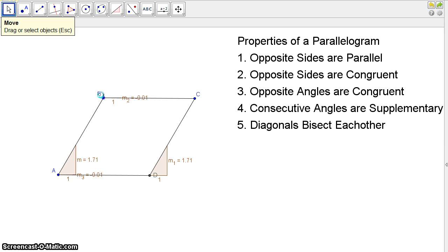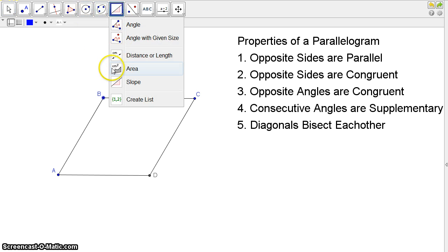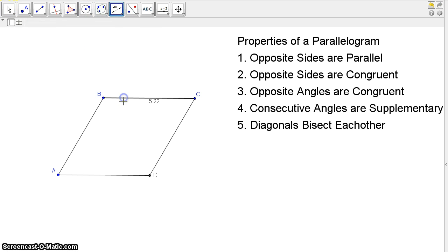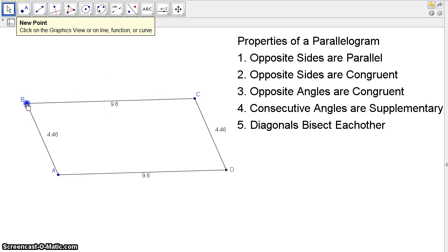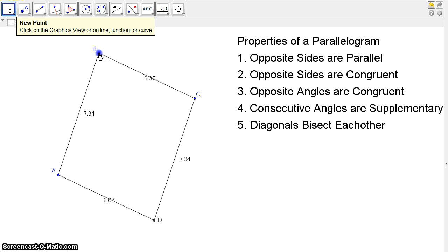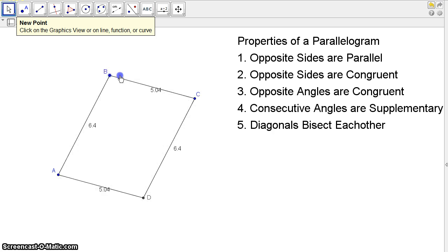Now what's good about that is now that that is met, I know that all the other properties will work because it is in fact a parallelogram. So opposite sides are congruent. We can look at the length of the sides, and this is just in units from our graph. And as I move this around, notice how those opposite sides, no matter how big or how small, always remain the same.